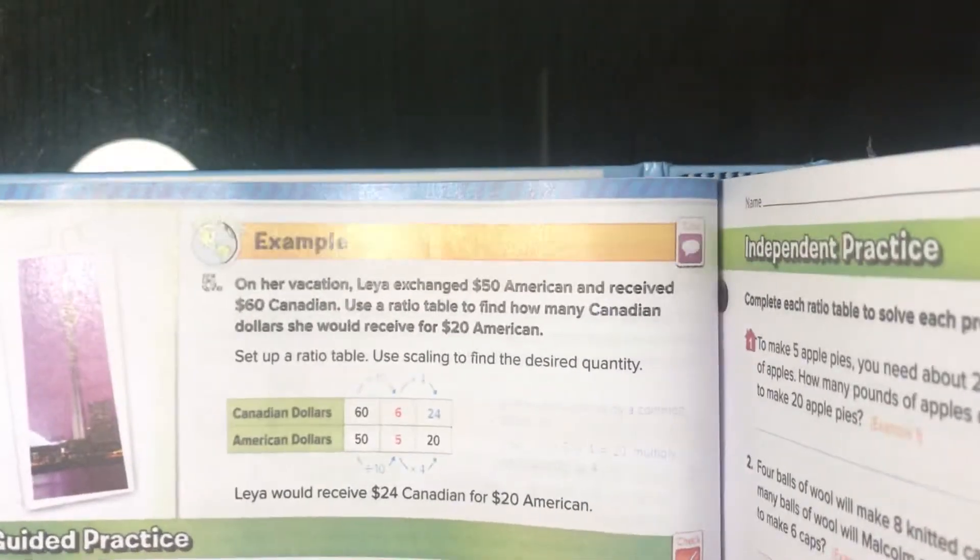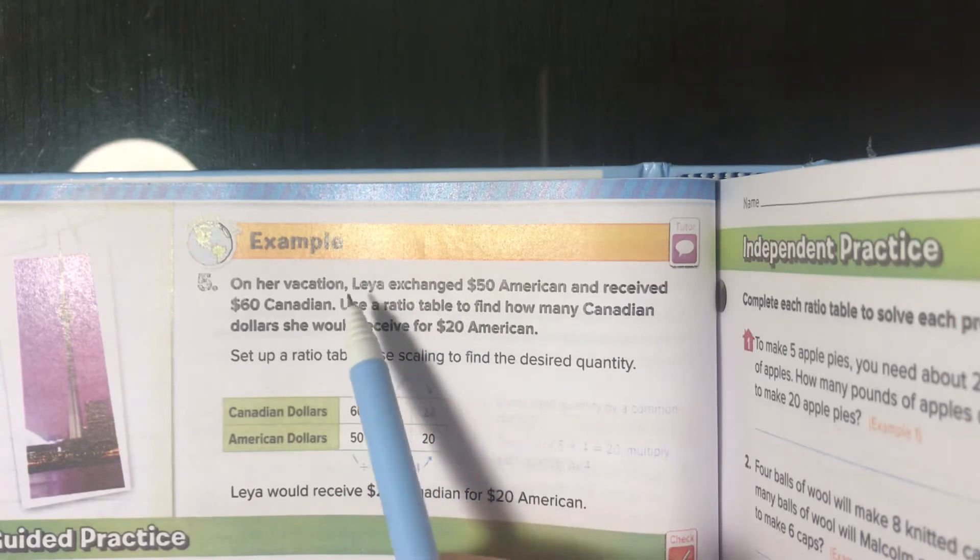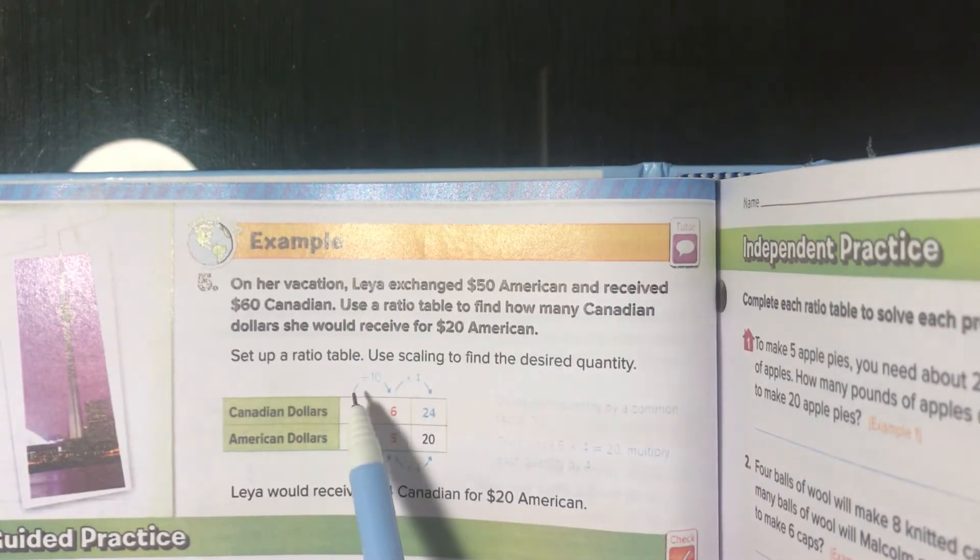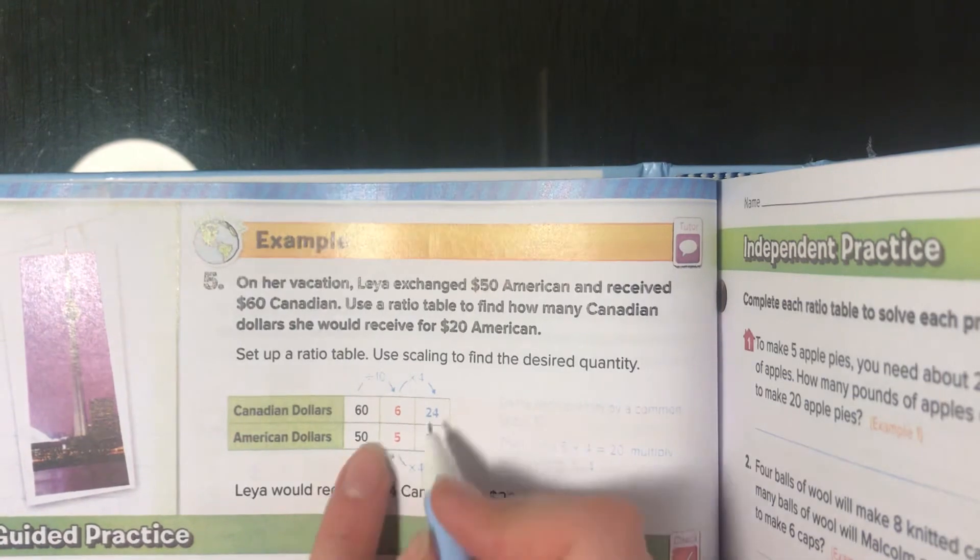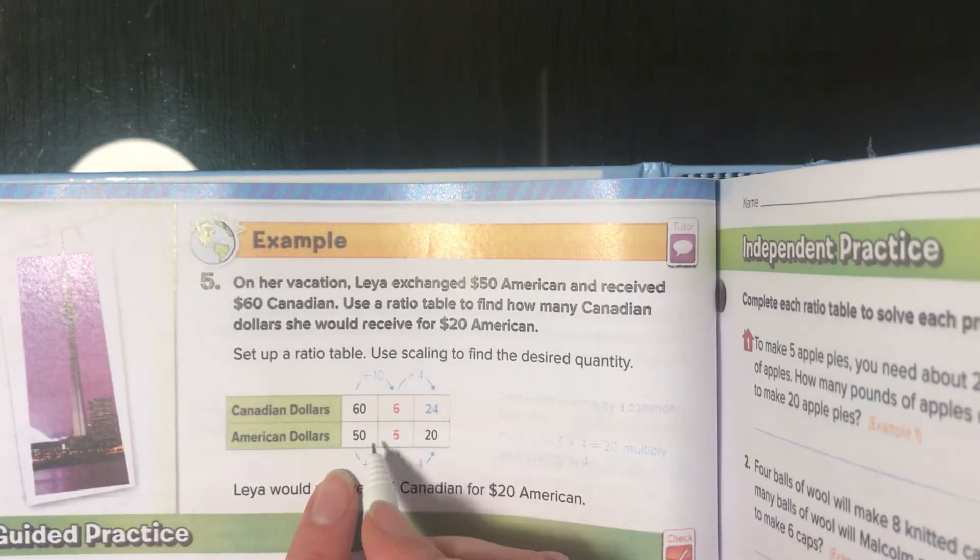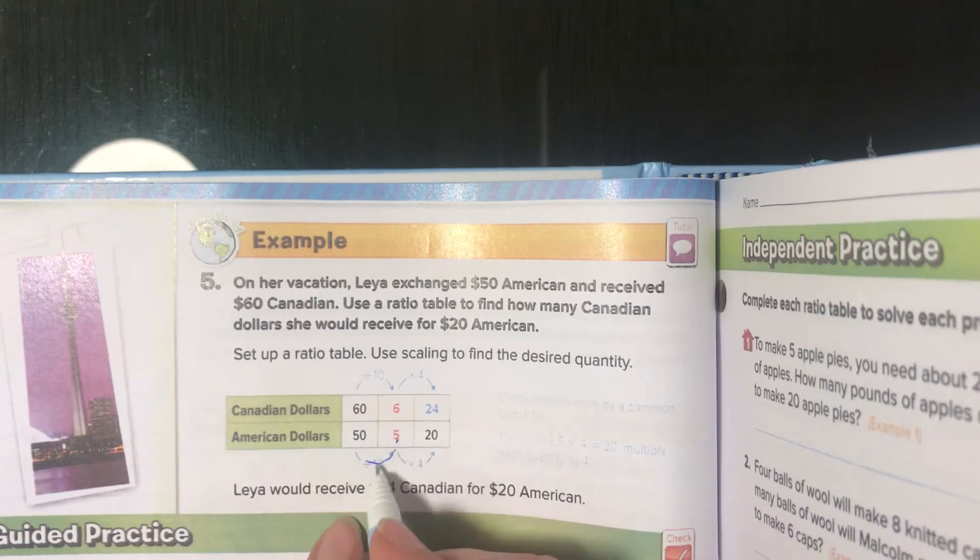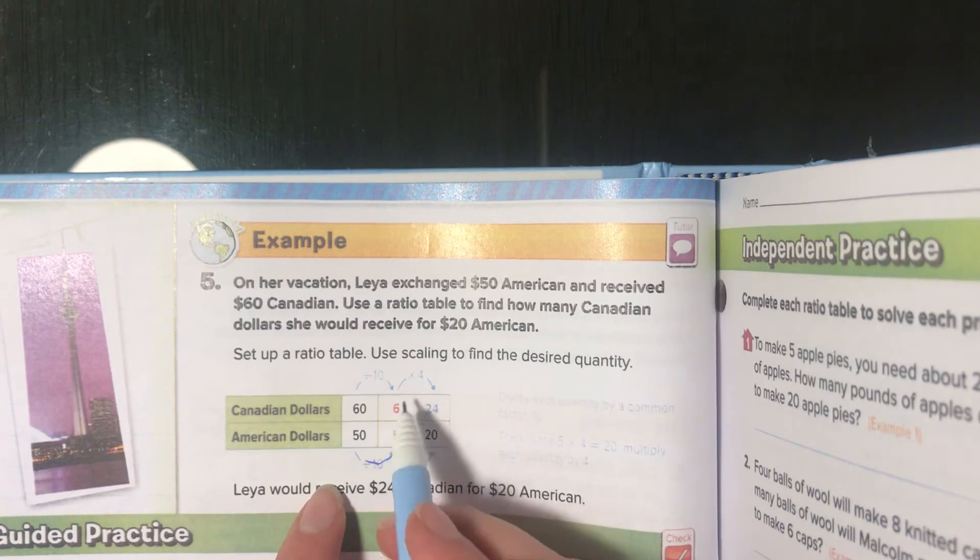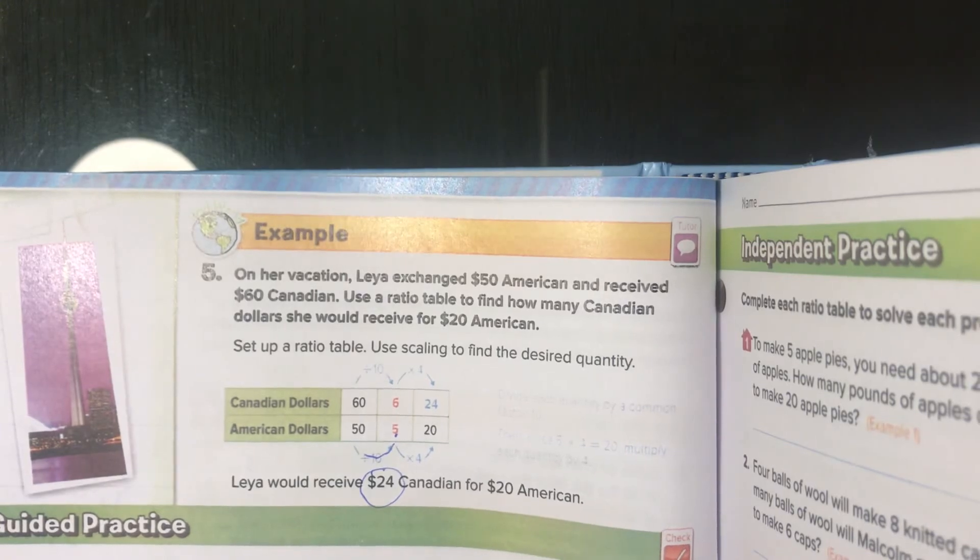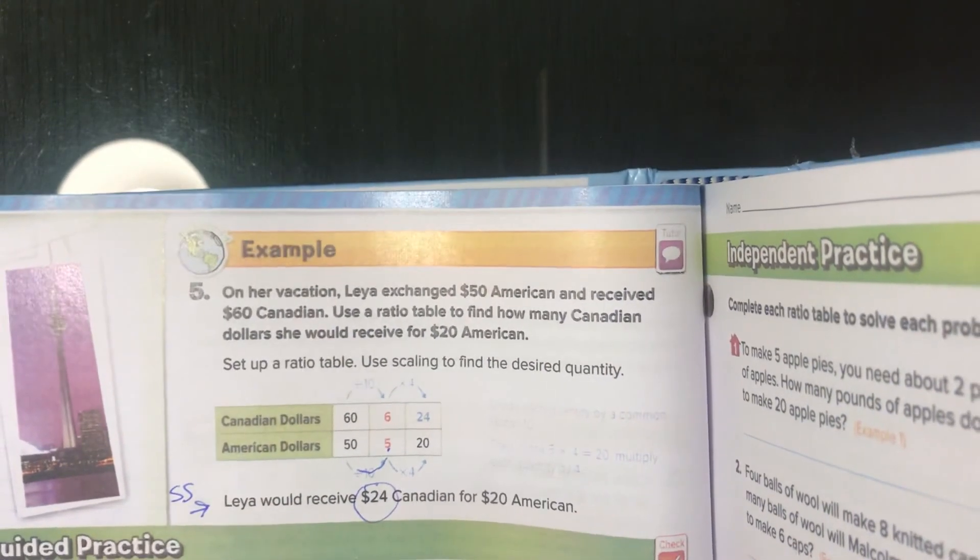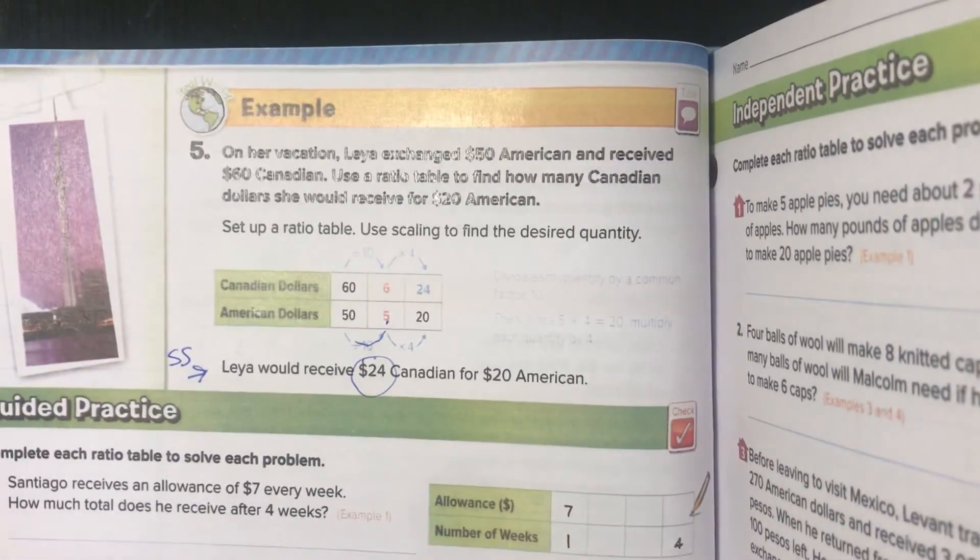Just one more example. On her vacation, Leila exchanged fifty American dollars and received sixty Canadian back. Use a ratio table to find how many Canadian dollars she would receive for twenty American. So we know sixty and fifty and we know twenty. So, they're scaling down to five. Divide by ten, divide by ten, which gives you six. And then from five to twenty, you have to multiply by four. And then multiply by four to get twenty-four Canadian for twenty American. And this is how to write the sentence. We'll keep working on these examples in class. I'll see you then.